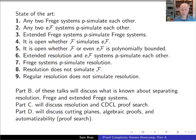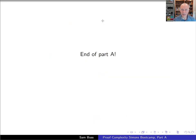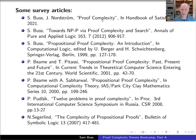In the talks going forward: Part B discusses separating resolution and extended Frege systems, especially using the Pigeonhole Principle; Part C discusses resolution and its subsystems and their relation to conflict-directed clause learning (CDCL) proof search; Part D discusses further proof systems. This is the end of Part A. Several survey articles are available, including one by Jakob Nordström and myself on proof complexity, coming out approximately in early 2021.